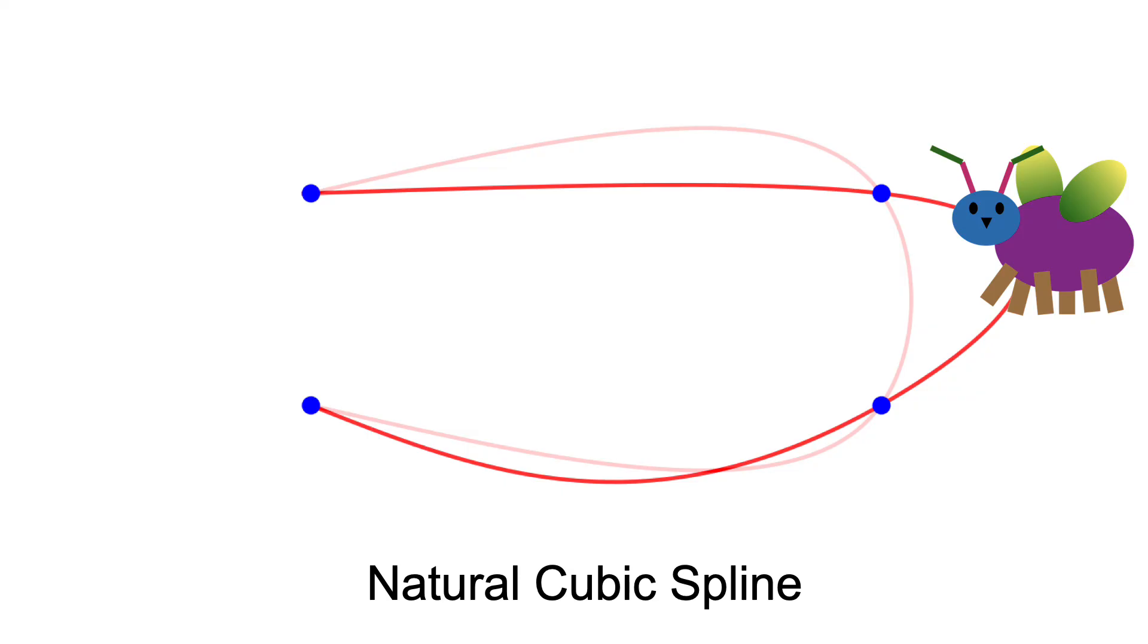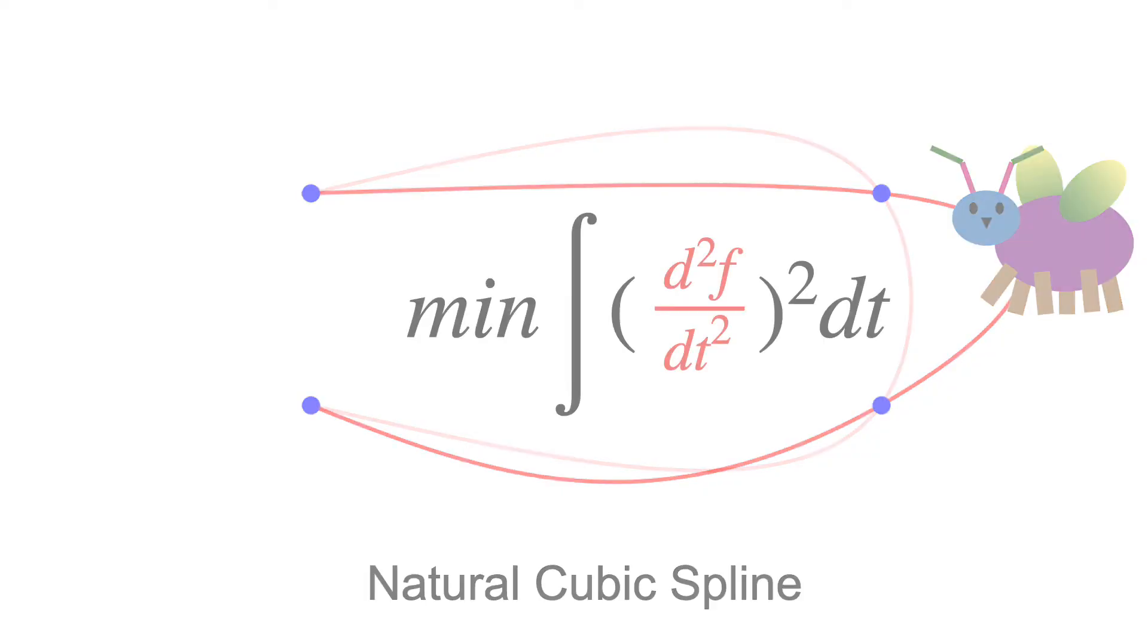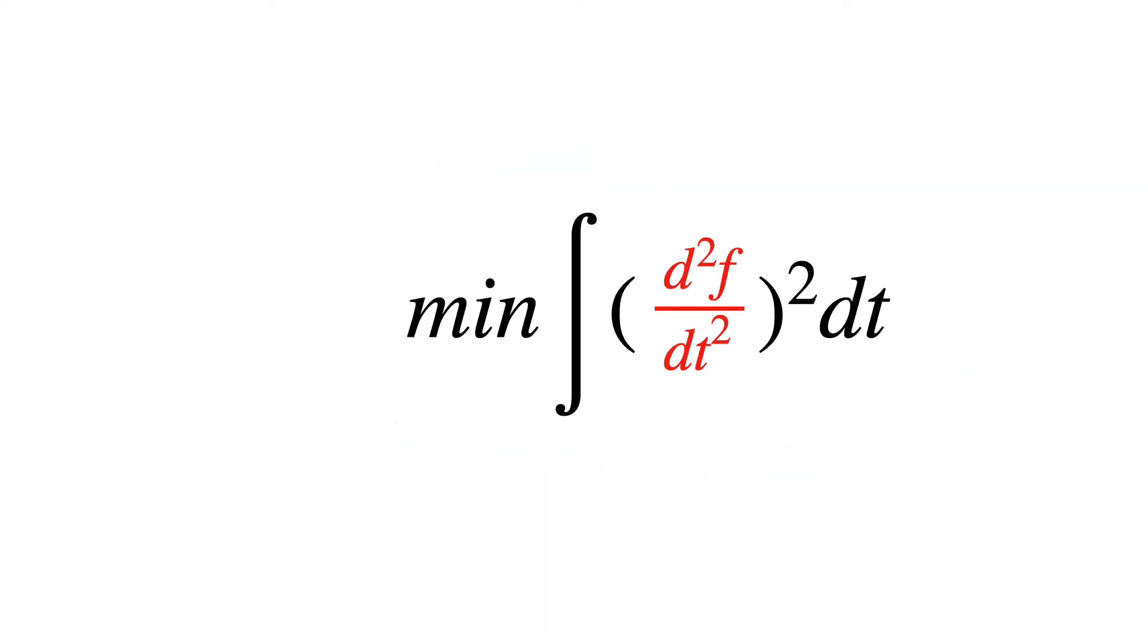Well, this is the magic of natural cubic splines. Recall that a natural cubic spline minimizes the square of the second derivative over time. We can write this as acceleration.